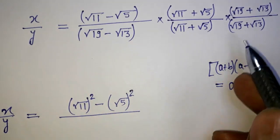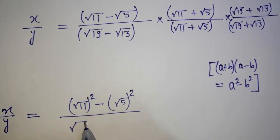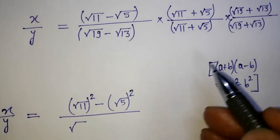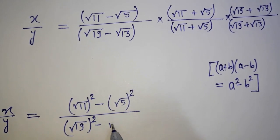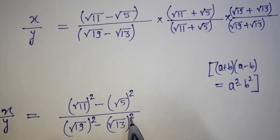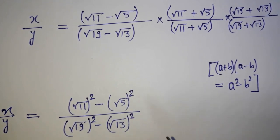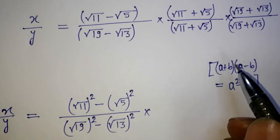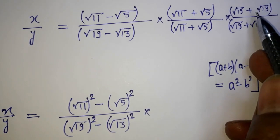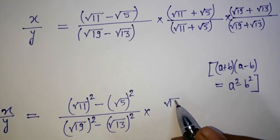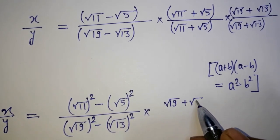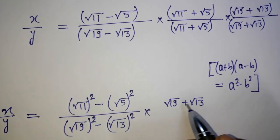And this is going to multiply with this one, so root 19 squared minus root 13 squared. And we have this remaining over here: root 19 plus root 13.